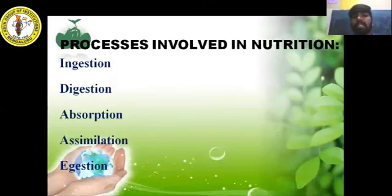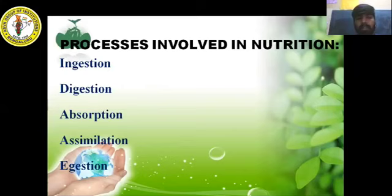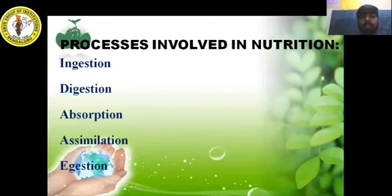There are five main processes involved in nutrition: ingestion, digestion, absorption, assimilation, and egestion. These are the five steps involved in the process of nutrition.